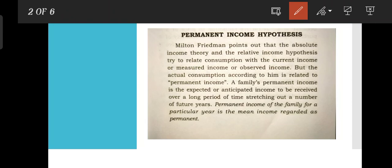Milton Friedman points out that the absolute income theory and relative income hypothesis try to relate consumption with current income, or measured income, or observed income. Friedman's Permanent Income Hypothesis, by contrast, relates consumption to permanent income rather than current observed income.